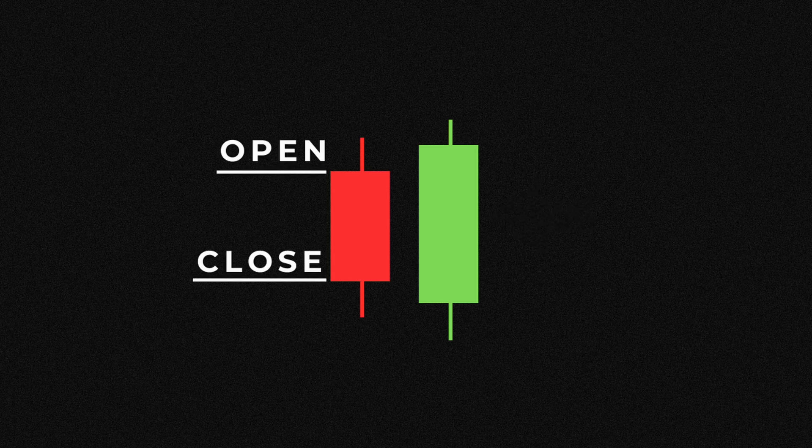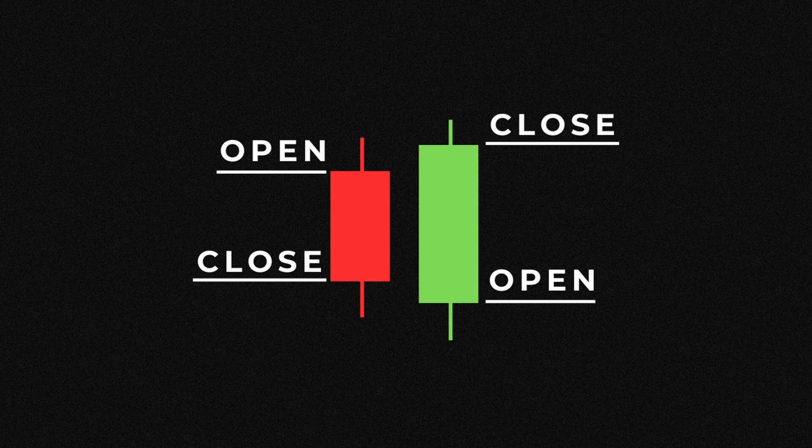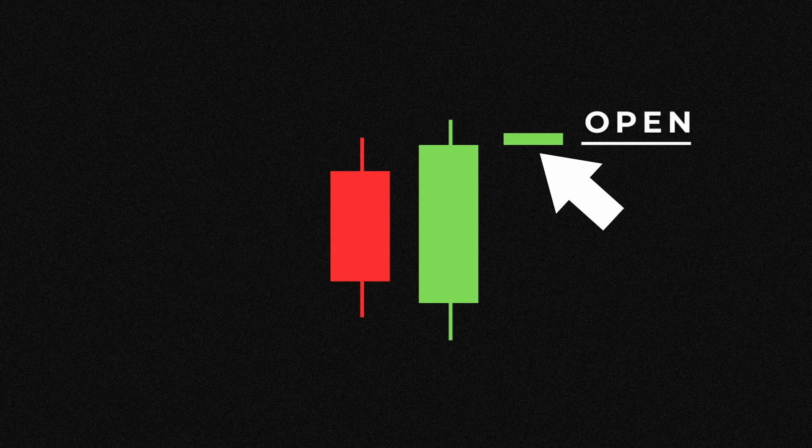The entry signal is a bullish engulfing candle. This is when the current candle opens at or below the previous candle's close, then closes above the previous candle's open, thus fully engulfing it. The wicks aren't included here — just the candle body. The trade is then taken on the next candle's open.